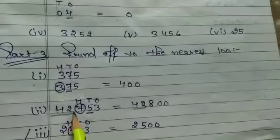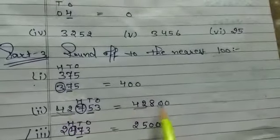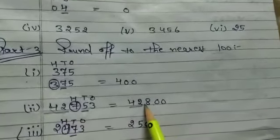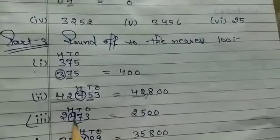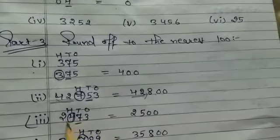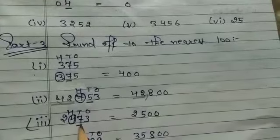Next question: 2473. You have to do it the same way. Circle the hundreds place. 7 is greater than 5, so the answer is 2500.